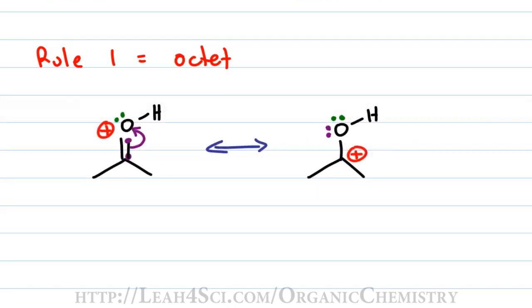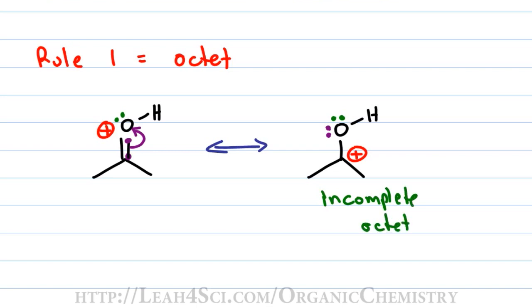Analyzing these two structures: they both have the same atoms, all the electrons are present, and both structures have a net charge of plus one. In the first structure, we have a complete octet on both carbon and oxygen — carbon has 3 sigma and 1 pi for 4 bonds and 8 electrons, and oxygen has 2 sigma, 1 pi, and a lone pair for 8 electrons. But in the structure on the right, carbon has only 3 sigma bonds for 6 electrons, missing 2 electrons in its octet. That makes the right structure slightly less stable, making it a minor contributor while the structure on the left is the major contributor.